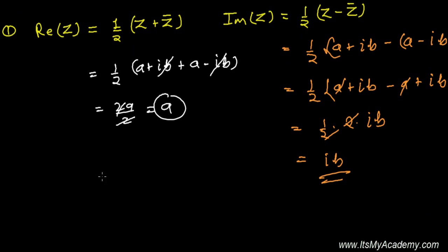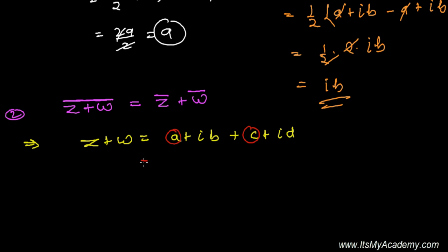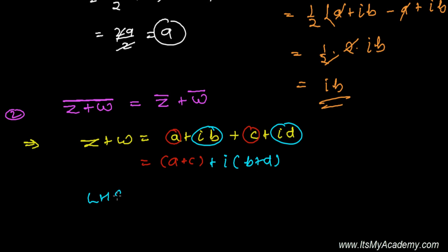The next property: if you add two complex numbers and then find the conjugate of that sum, it equals the sum of the individual conjugates of those two numbers. That is, conjugate(Z + W) = Z̄ + W̄. Let me prove this. Z is A + iB and W is C + iD. When we add them, we combine real parts and imaginary parts: (A+C) + i(B+D). The left-hand side is the conjugate of (Z + W).